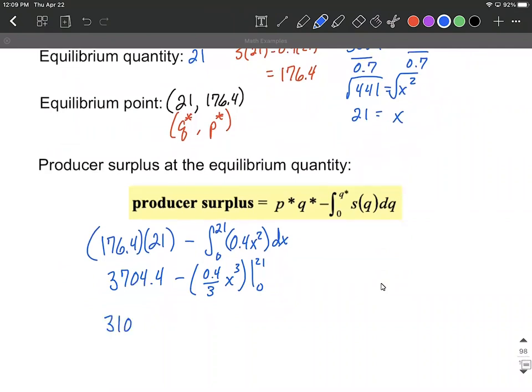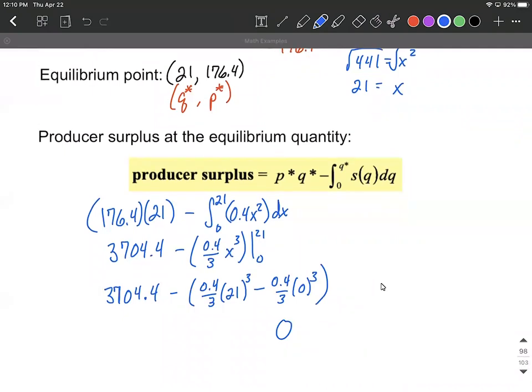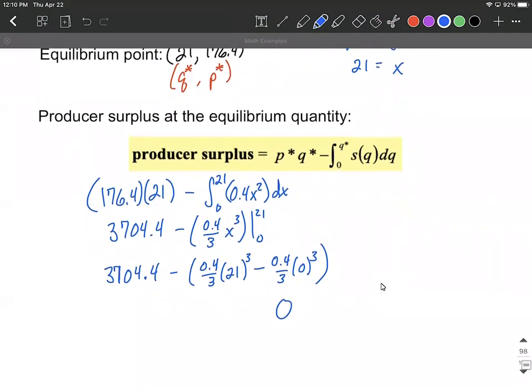So 3,704.4 minus 0.4 divided by three - this is where we plug in the 21 and subtract away 0.4 divided by three, where we plug in our zero. Sorry, I forgot my cube. And then this last part is gonna become zero, but the rest of it is gonna be 2,469.6 as we put it into our calculator.